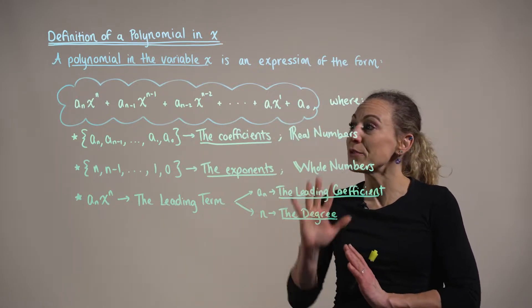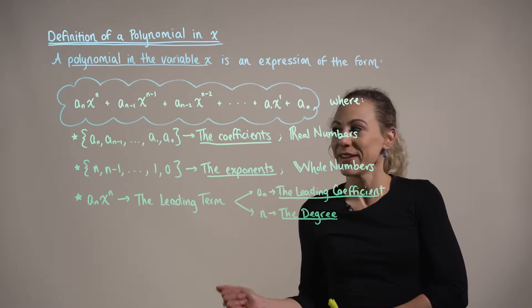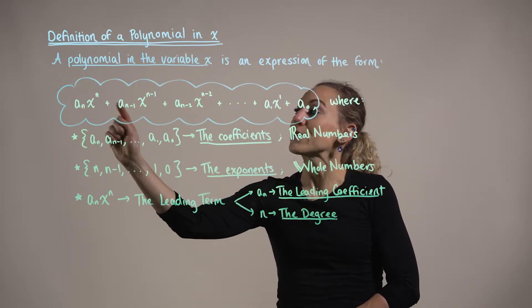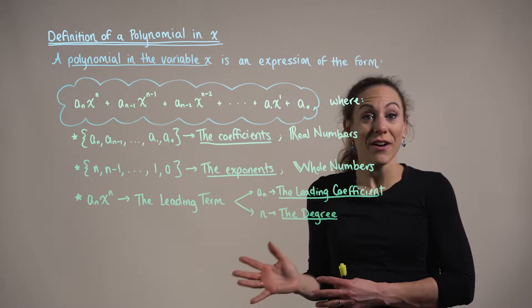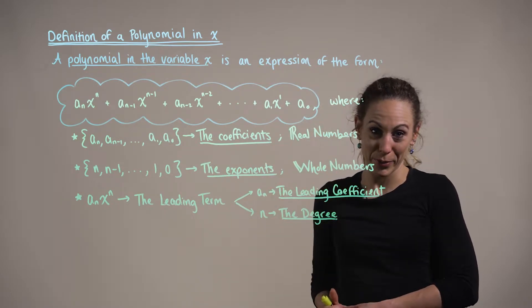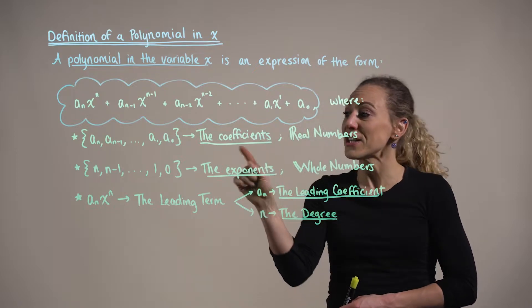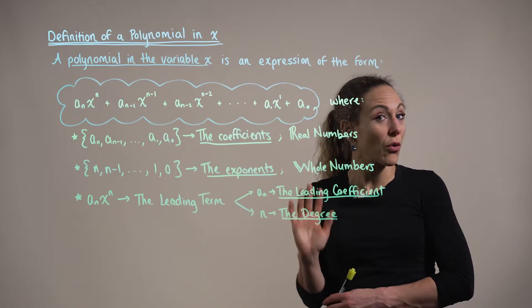Now, we want to make note of what these terms mean. The set of all of these a values are the coefficients or the constants attached to each variable. These coefficients are restricted to the set of all real numbers.